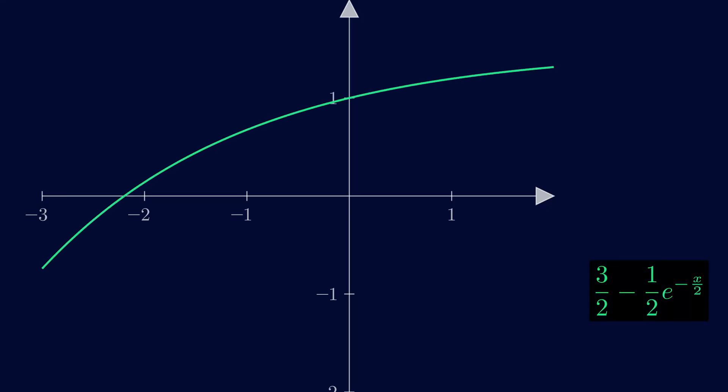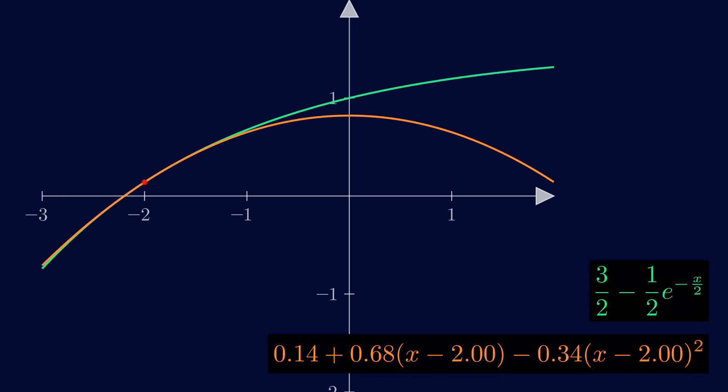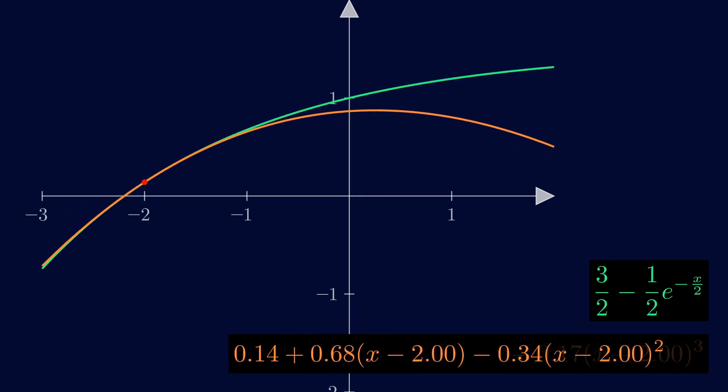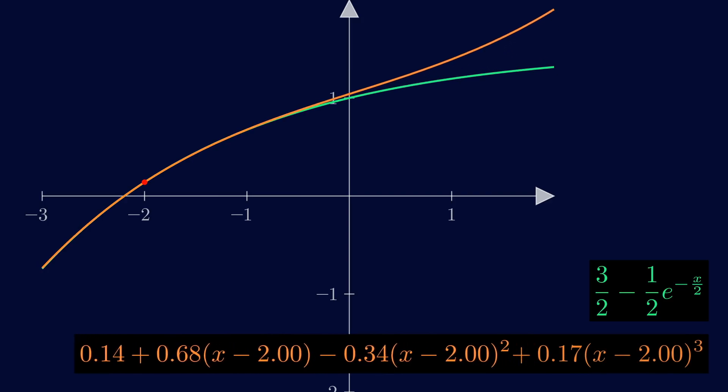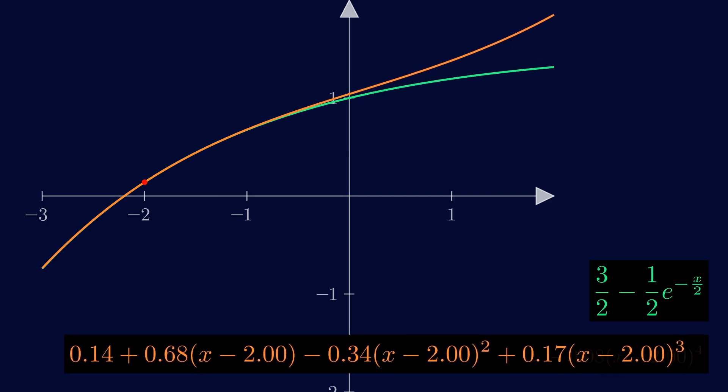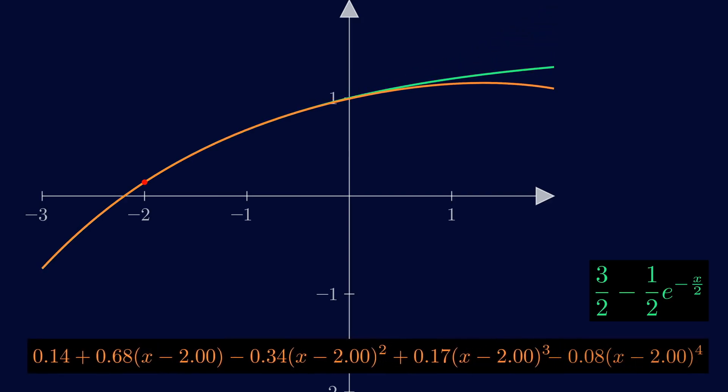When we first learn about Taylor polynomials, we usually learn that they're useful for estimating complicated expressions, although at the time we probably had no idea why we would want to do this. There are tons of applications actually, but maybe a simple use case is that it helps computers evaluate certain functions.